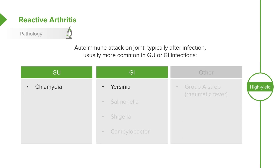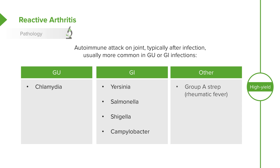From a GI standpoint, there are some bugs more likely implicated in reactive arthritis. These include Yersinia enterolytica, Salmonella enteritis, Shigella, and Campylobacter — in other words, the bacterial pathogens other than E. coli most likely to cause this problem. There's also group A strep, which we consider a different issue, as group A strep reactive arthritis is part of rheumatic fever, which we'll discuss in another lecture.